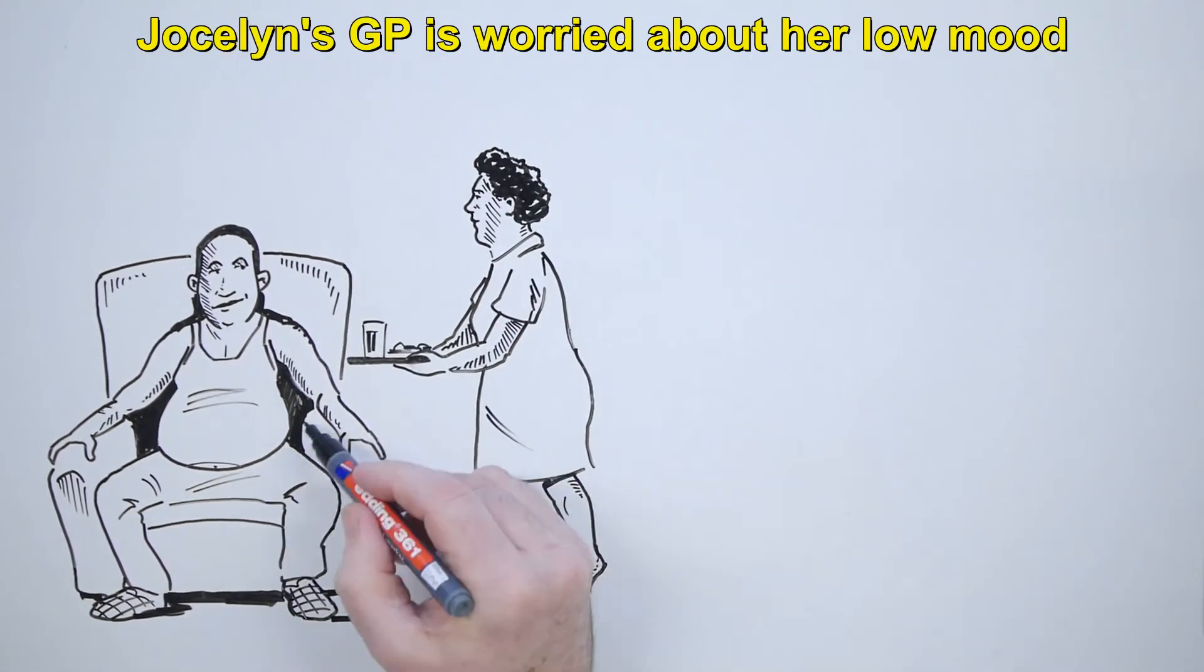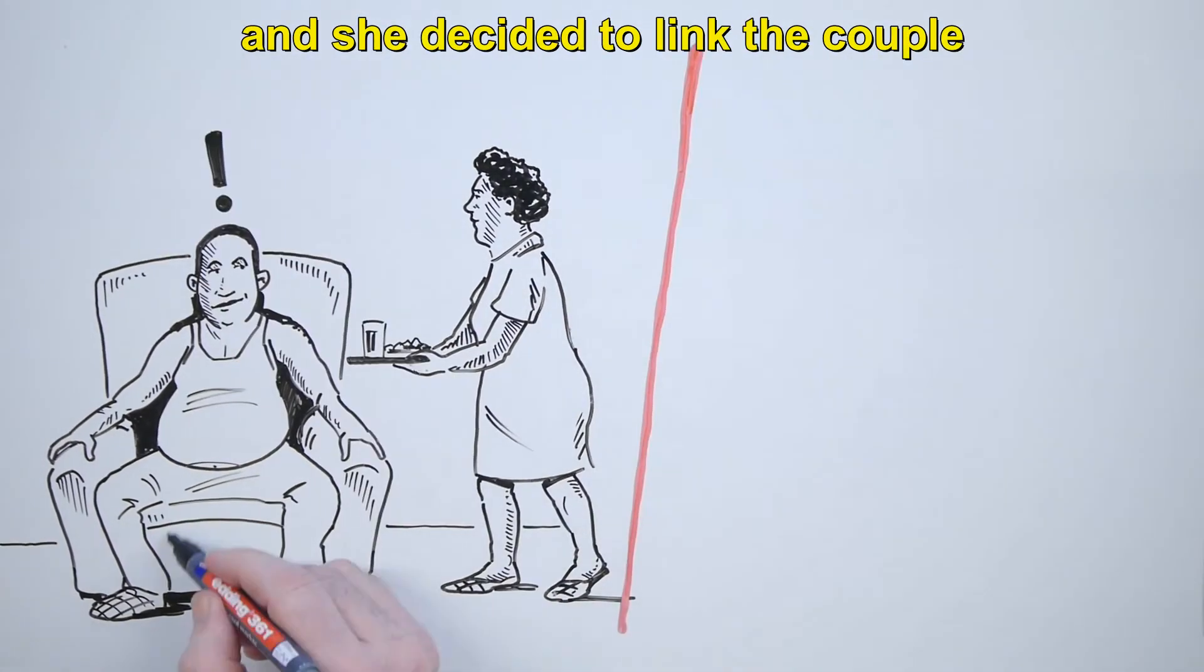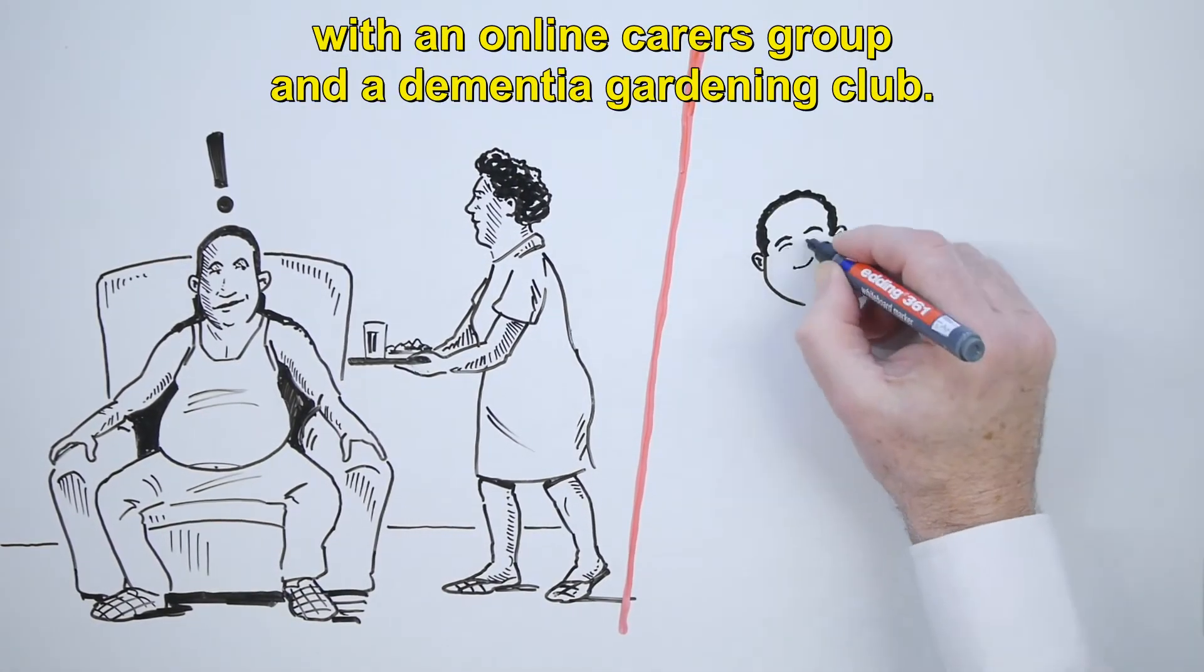Jocelyn's GP is worried about her low mood and decided to link the couple with an online carer's group and a dementia gardening club.